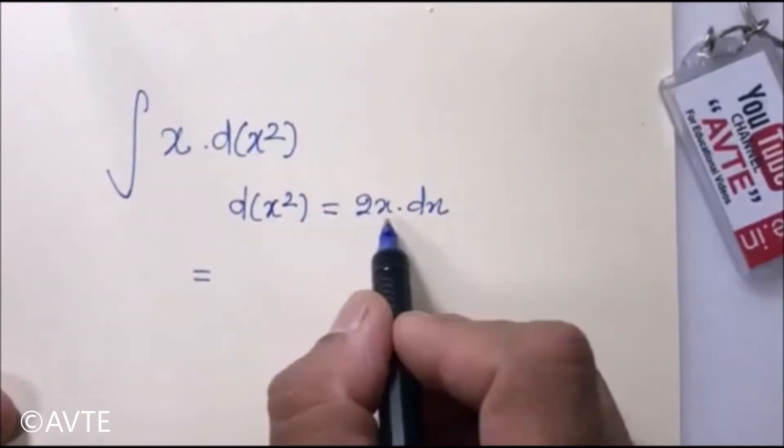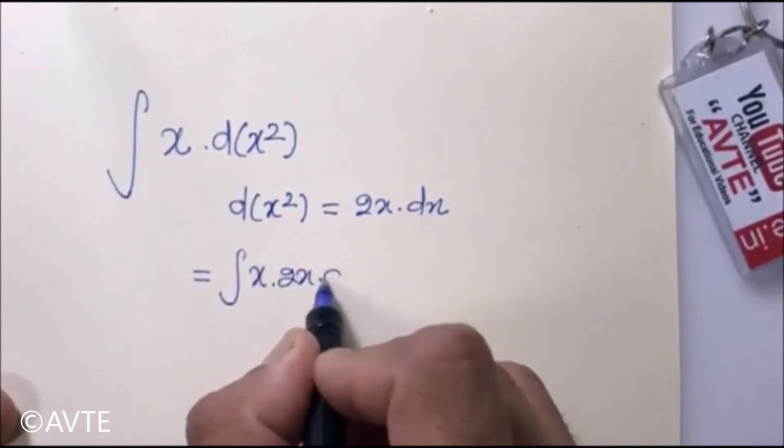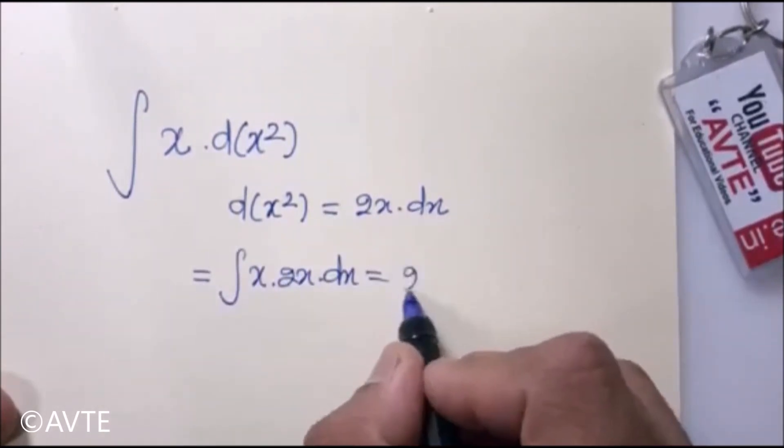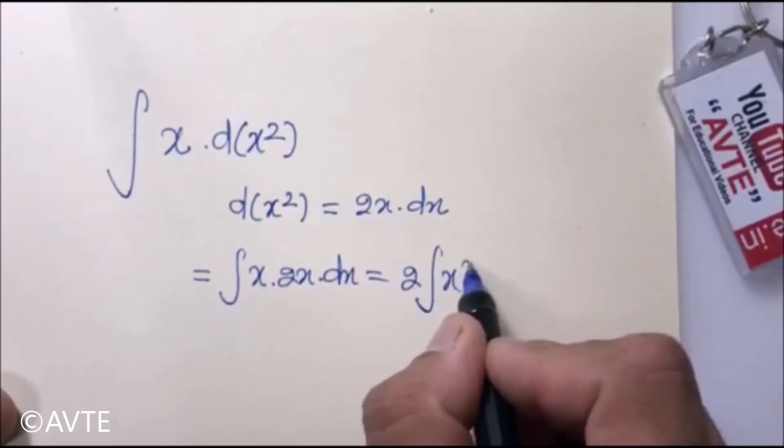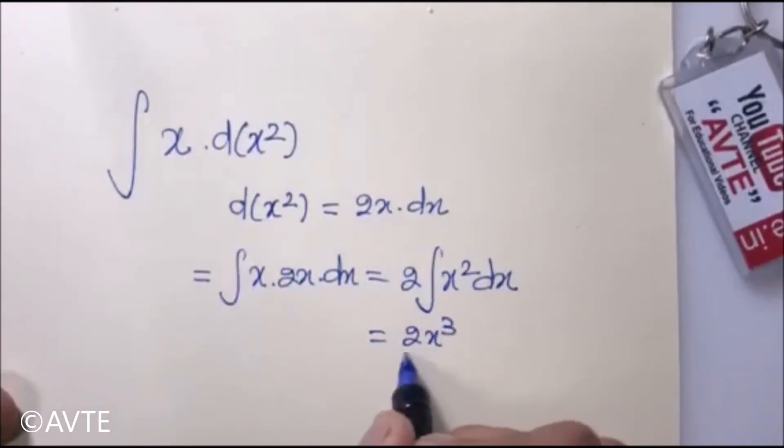And now you simply put 2x dx with x. So this becomes 2 times the integration of x square dx, which is very simple and easy.